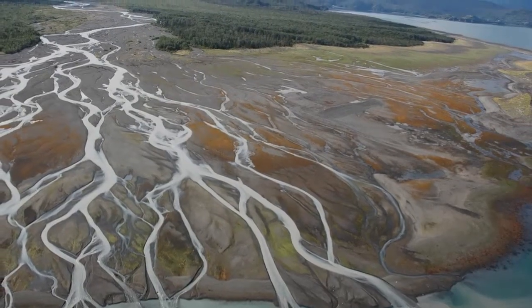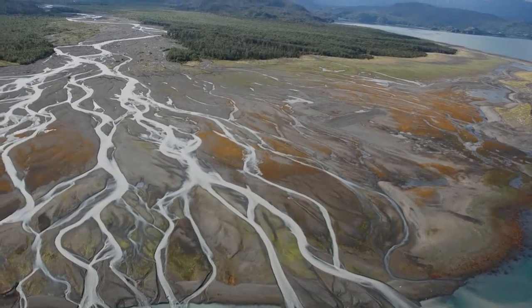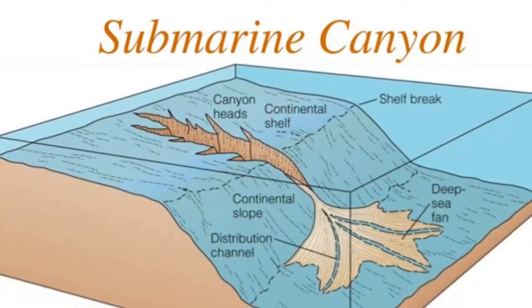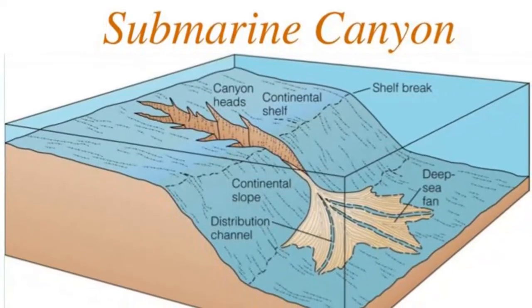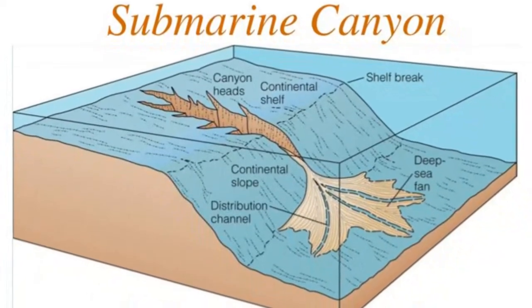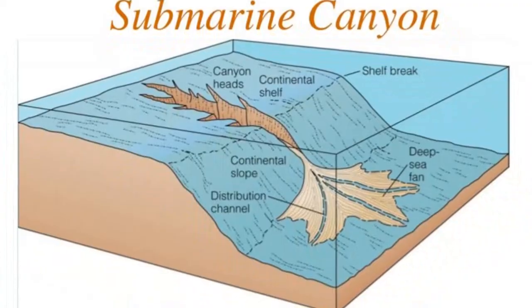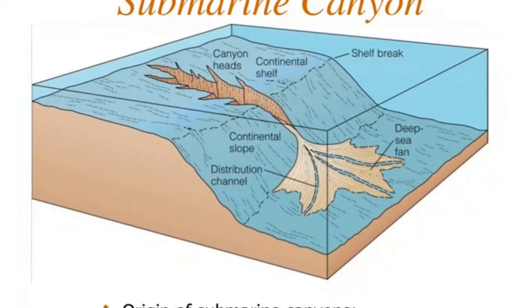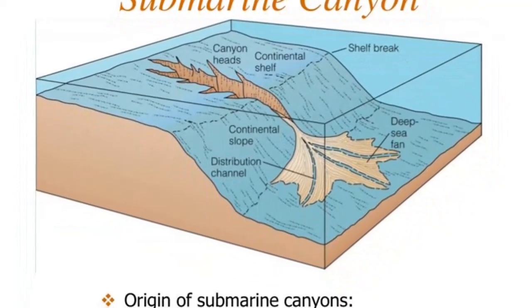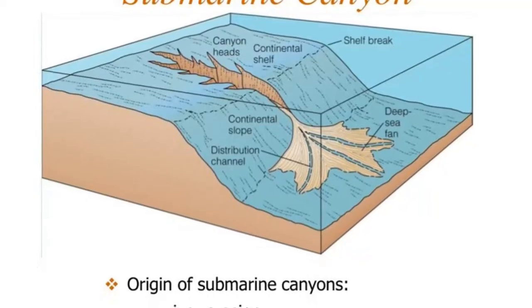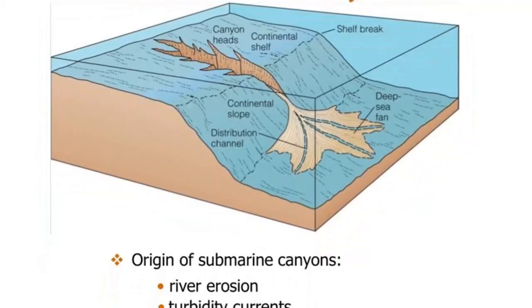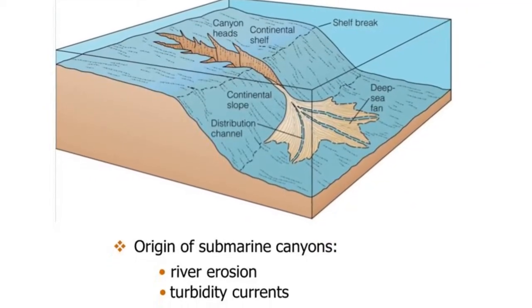Marking the seaward edge of the continental shelf is the continental slope, a relatively steep structure — as compared with the shelves — that marks the boundary between the continental crust and the oceanic crust. Although the inclination of the continental slope varies greatly from place to place, it averages about 5 degrees, and in some places may exceed 25 degrees. Further, the continental slope is a relatively narrow feature, averaging only about 12 miles in width.